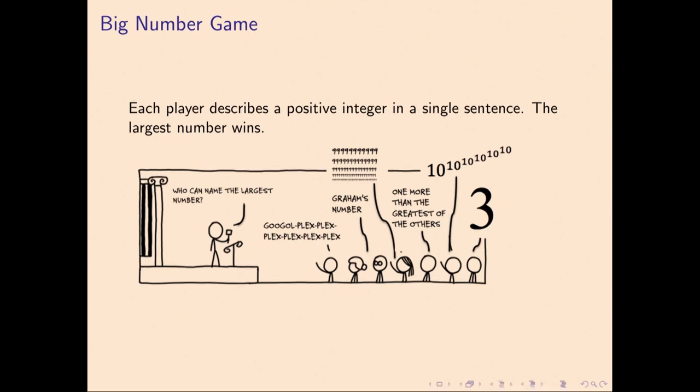Suppose we have a big number game. Players in this game define a positive integer, maybe describe it in a single sentence. This is problematic for a number of reasons. There could be inconsistent answers, self-referential statements. Somebody could say one larger than all of the others. So we want to make this game more precise.